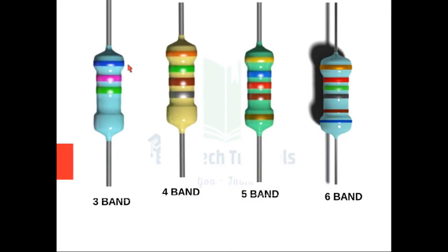So in this figure of the 3 band resistor, the first color is blue, next is pink, followed by green. And for a 4 band resistor, the first color is orange, followed by green, then brown, and then silver. Now for a 5 band and 6 band, we see from which side the bands are closer to each other and we start reading from that side.